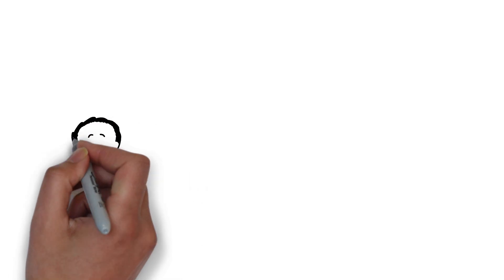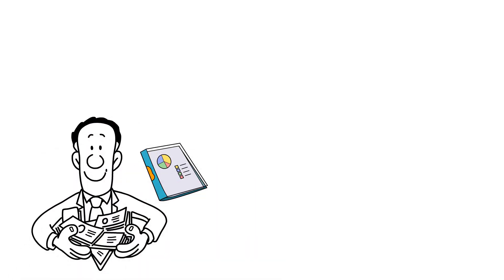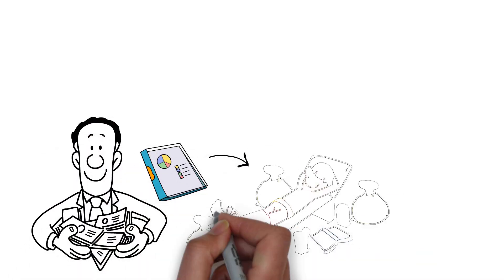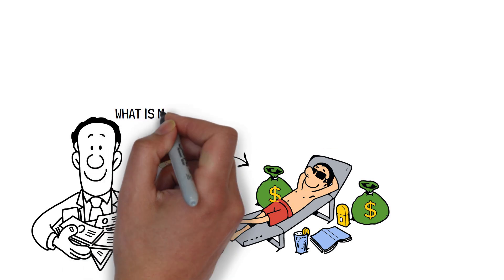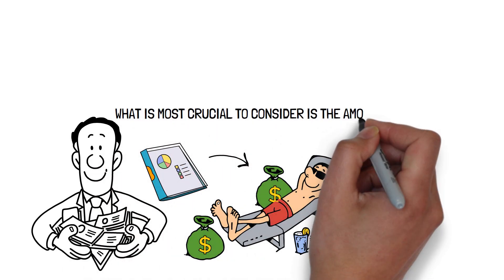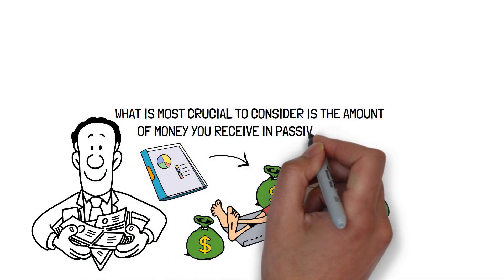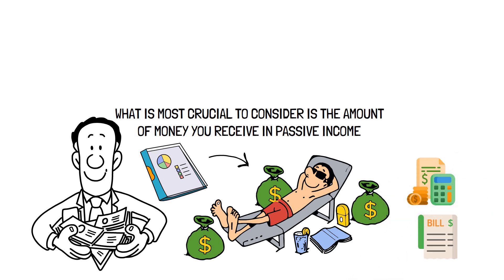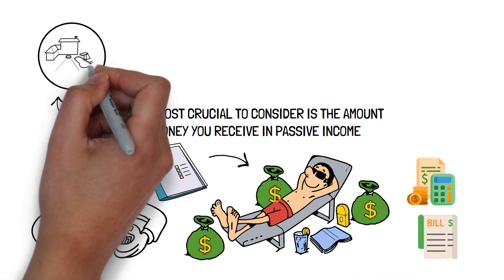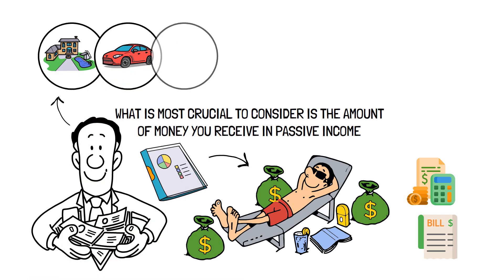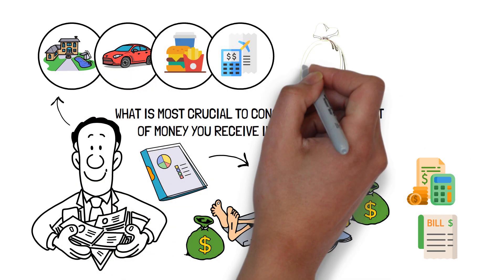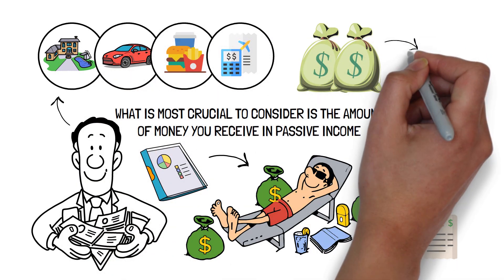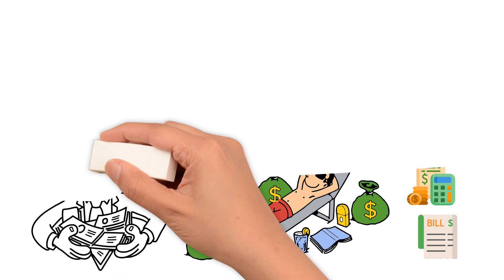Although net worth provides insight into your financial well-being, it is ultimately unimportant. What is most crucial to consider is the amount of money you receive in passive income. This is what will pay your bills and cover your daily expenses. The income will cover your lodging, transportation, food expenditures, and travel expenses. The amount of money you make without working will eventually determine when you can retire.